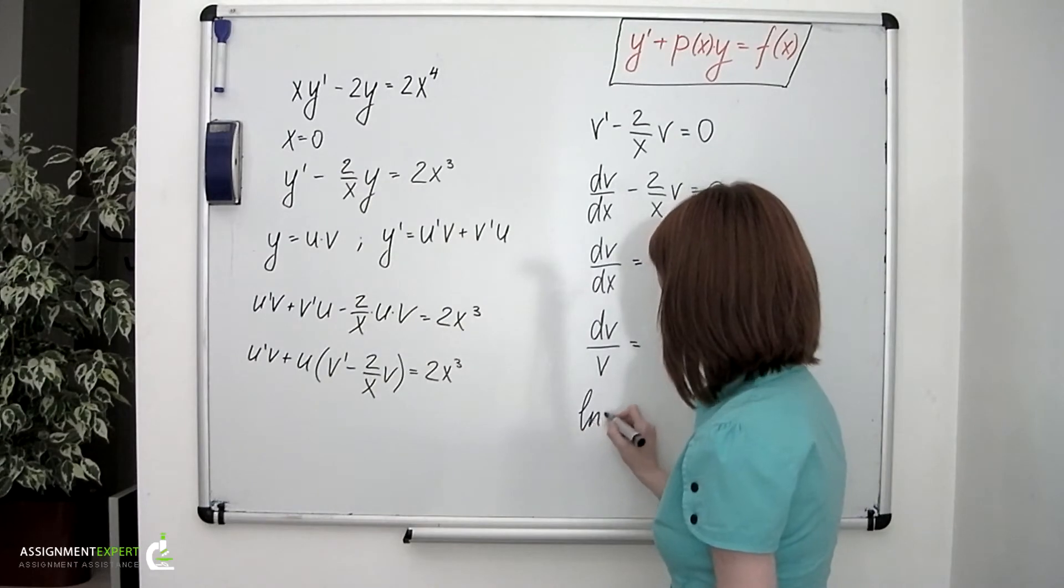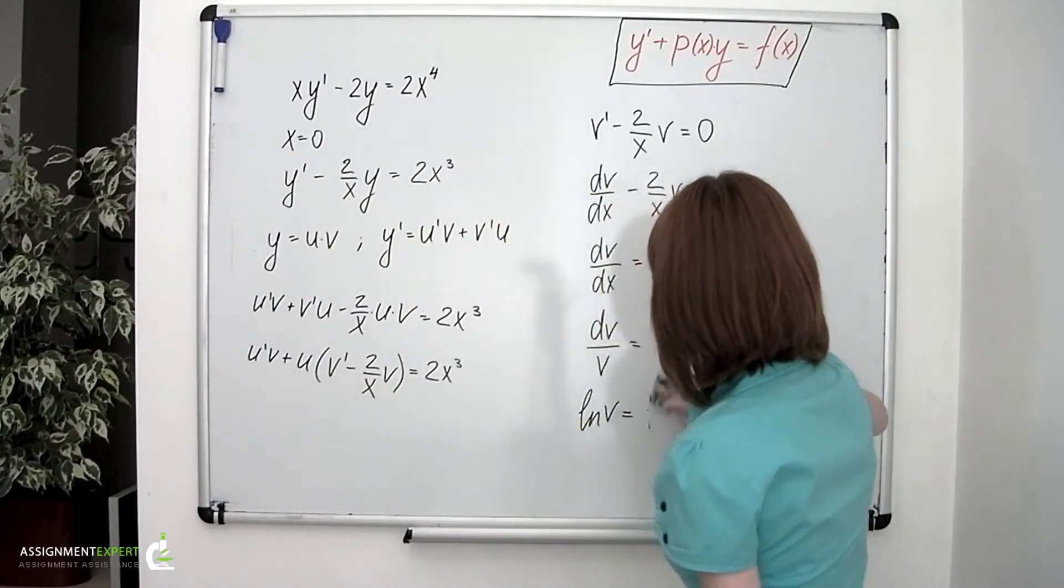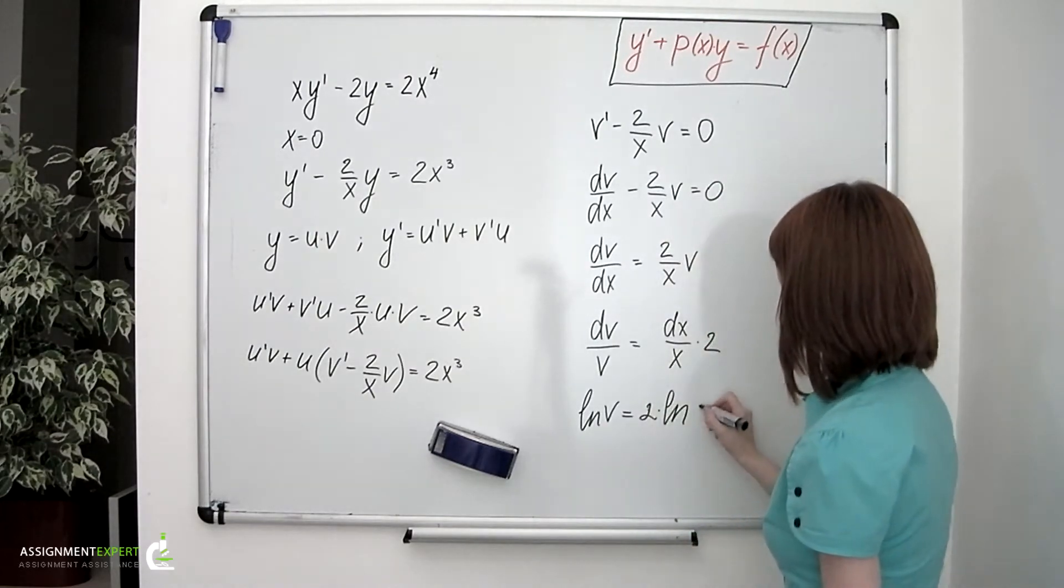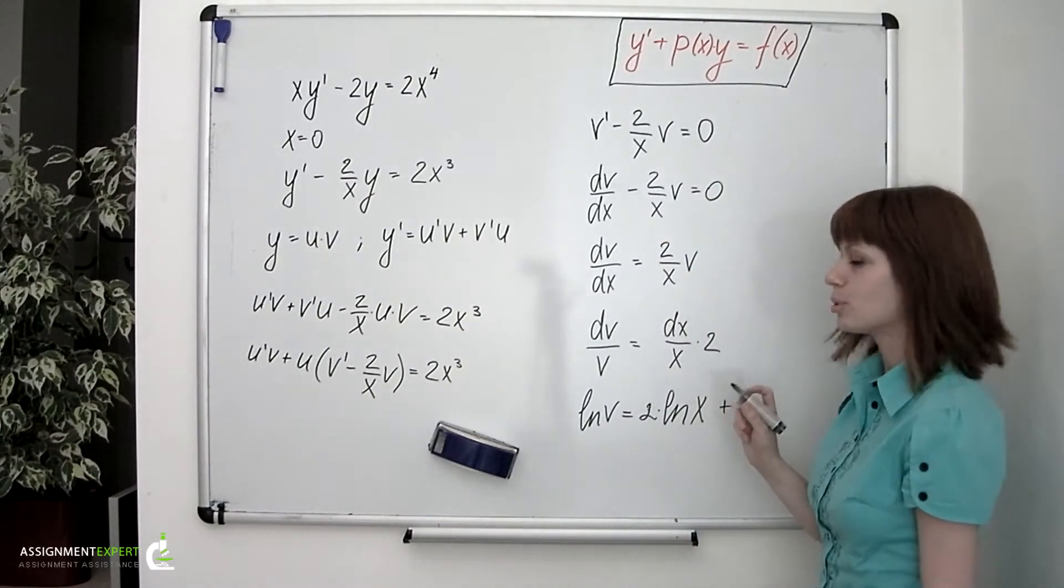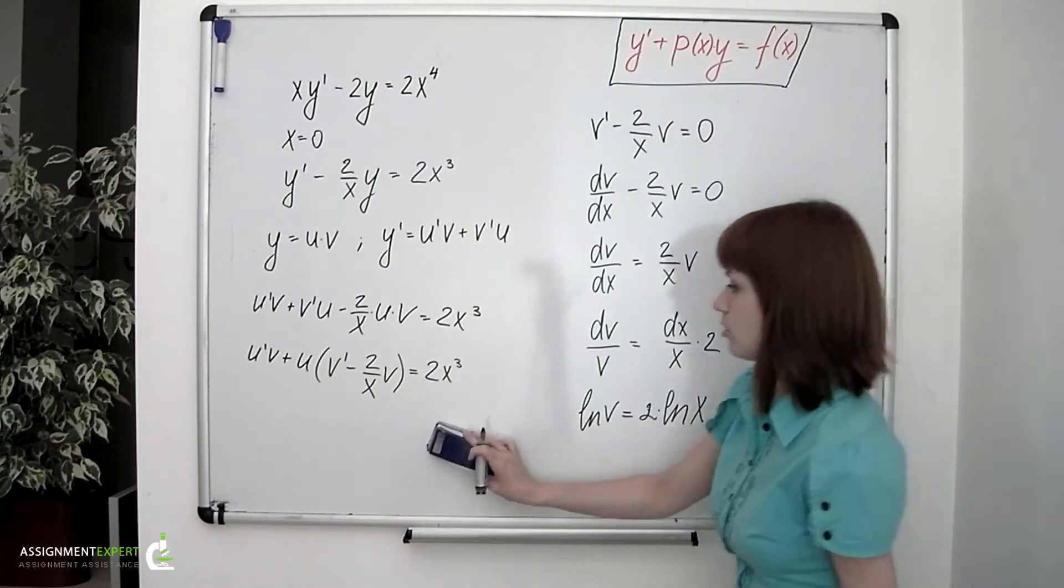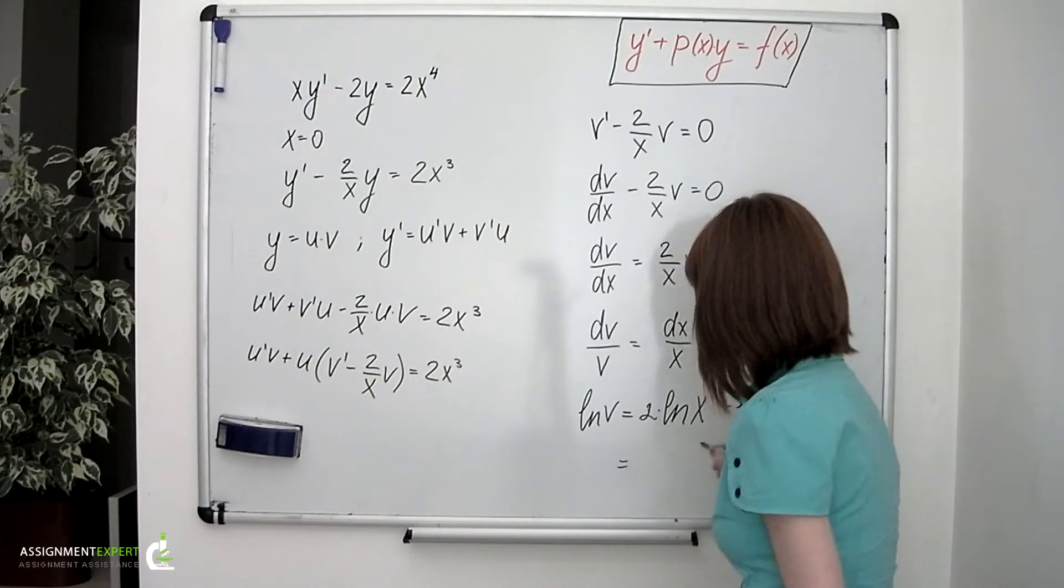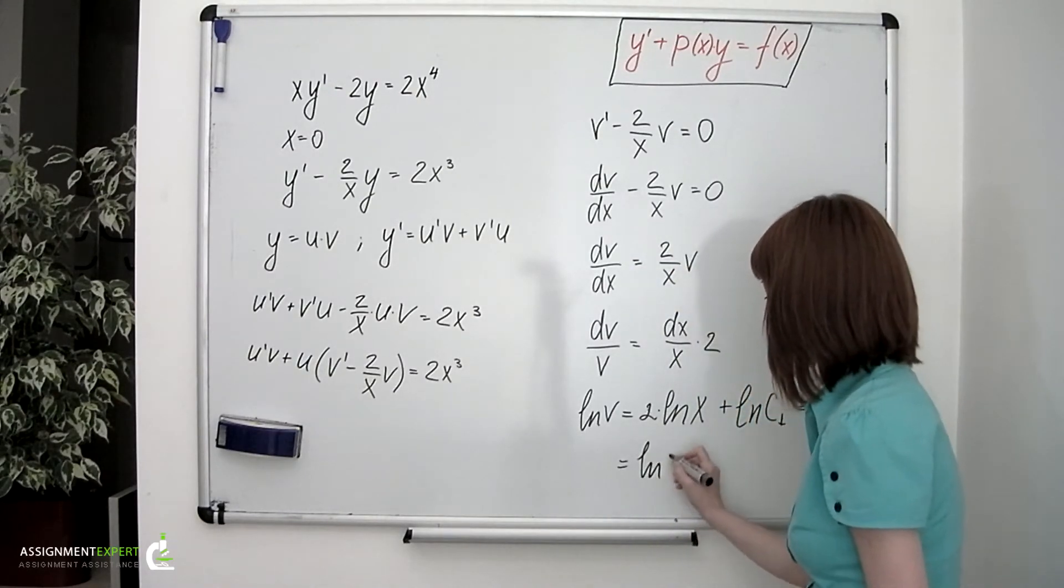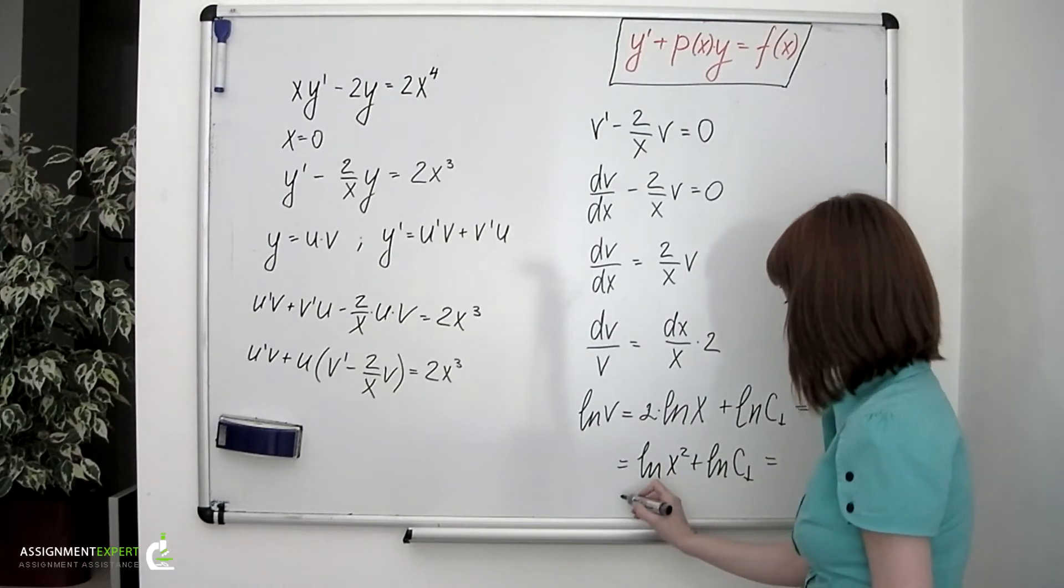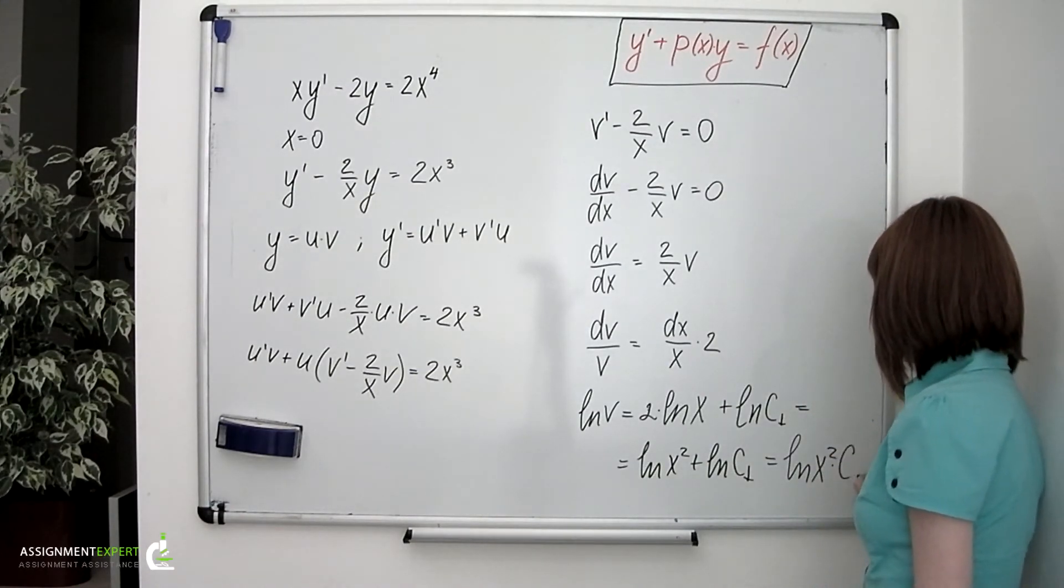We'll obtain ln v equals 2 times ln of x plus the constant, or we can write the logarithm of a constant. Also recalling some of the properties of the logarithm, we can write the following: ln of x squared plus ln of the constant, which is also equal to ln of x squared times the constant.